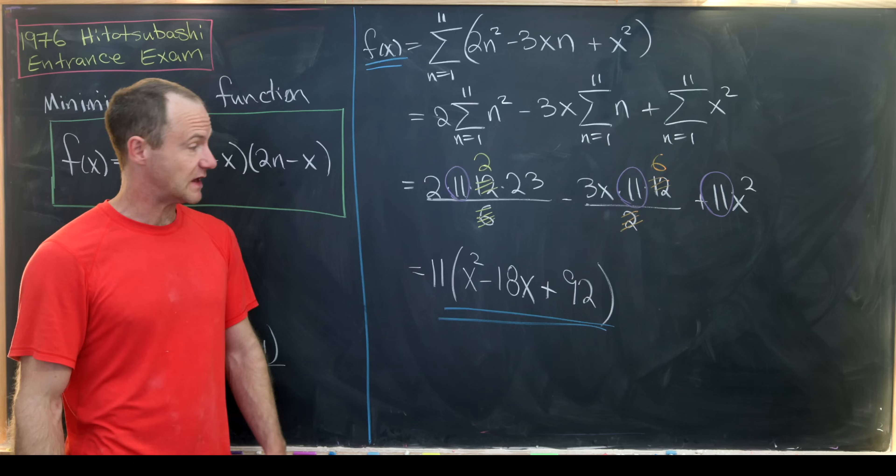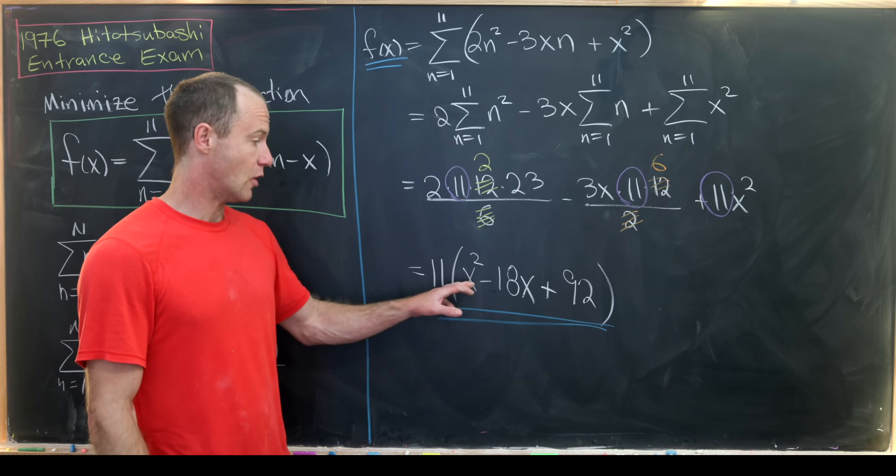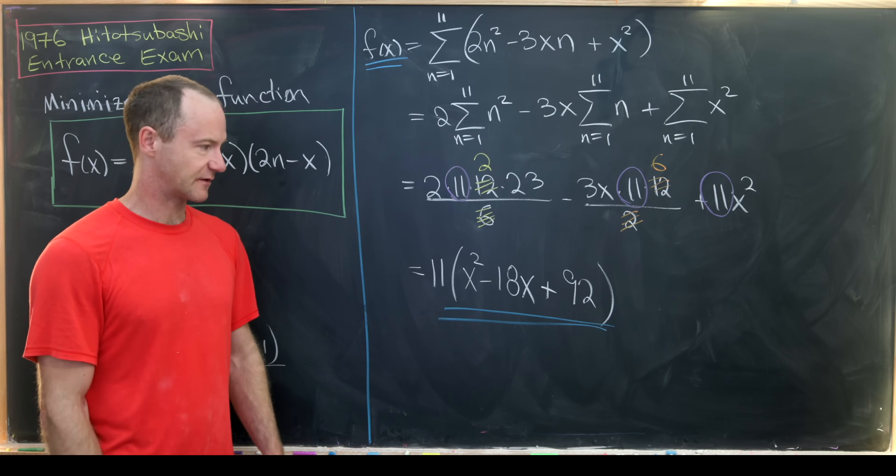We could use the formula for the vertex, so it would be like negative b over 2a. So that would be 18 over 2 or 9 based off of the quadratic formula.